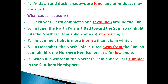In summer, light is more intense than it is in winter. The answer is 'intense'. Number next: In December, the north pole is tilted away from the Sun, so sunlight hits the northern hemisphere at a low angle.